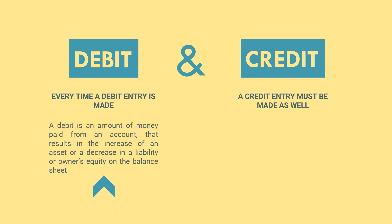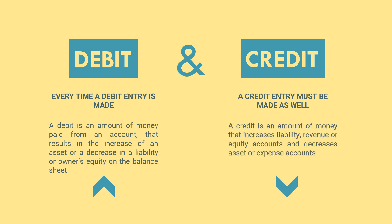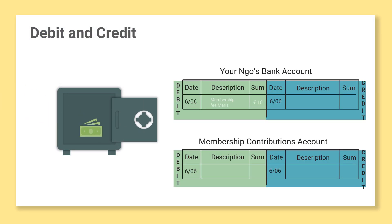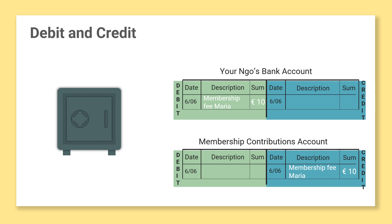A debit is an amount of money paid from an account that results in the increase of an asset or a decrease in a liability or owner's equity on the balance sheet. Credit is an amount of money that increases liability, revenue or equity accounts and decreases asset or expense accounts. For example, if you get 10 euros on your bank account, you will register them as debit. Then you will make a second entry as credit — in this case, we credit the account for membership contribution in the profit and loss statement.